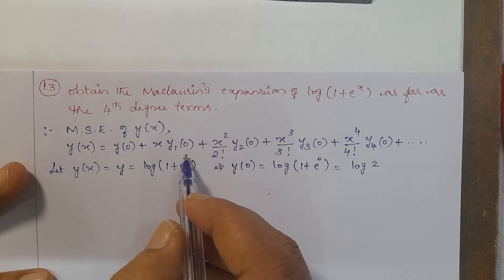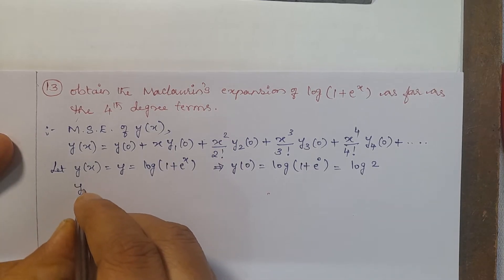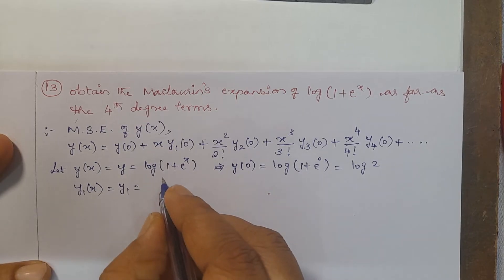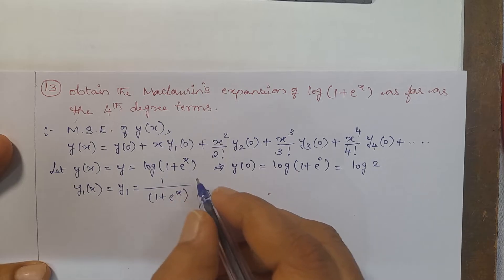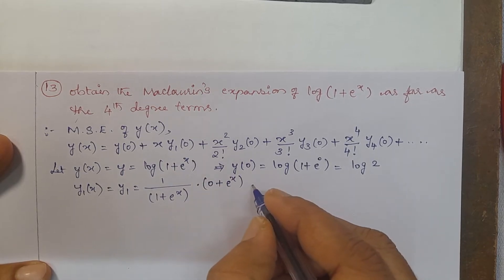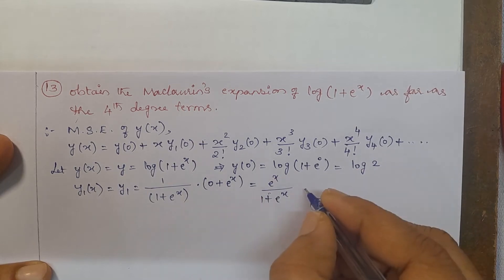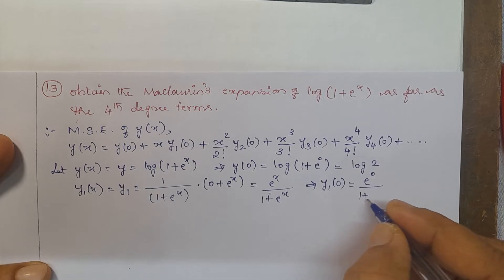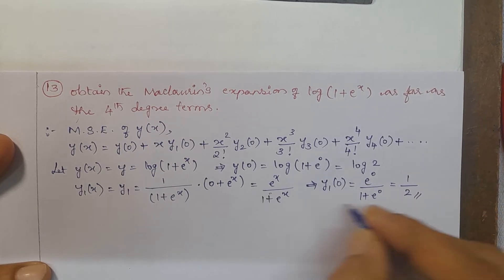Next, find y₁(0). First find y₁(x): differentiation of log(1 + eˣ) is 1/(1 + eˣ) times the differentiation of (1 + eˣ), which gives eˣ. So y₁(x) = eˣ/(1 + eˣ). Therefore y₁(0) = e⁰/(1 + e⁰) = 1/(1+1) = 1/2.